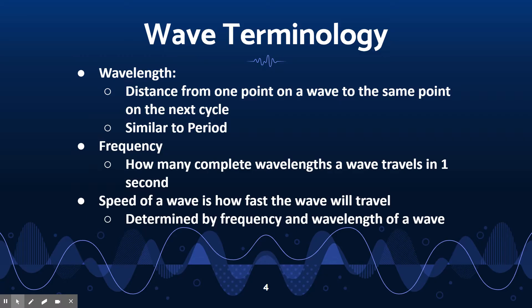When we look at waves, there are a few terms that we absolutely need to understand. The first is the wavelength. This is the distance from one point on a wave to the same point on the next cycle. A wavelength is from the crest of a wave to the crest of a wave, or the trough of a wave to the trough of a wave. We are looking at the wave being a cycle where it starts, goes through the process, and comes back to that very same point. The wavelength is the distance from one point on one wave to the same point on the next wave.